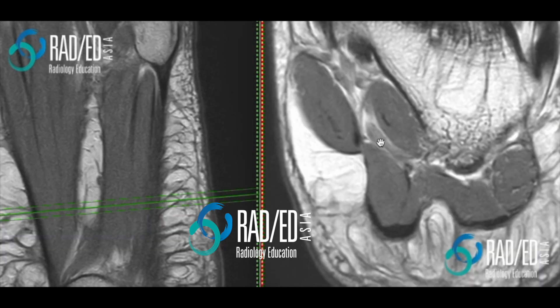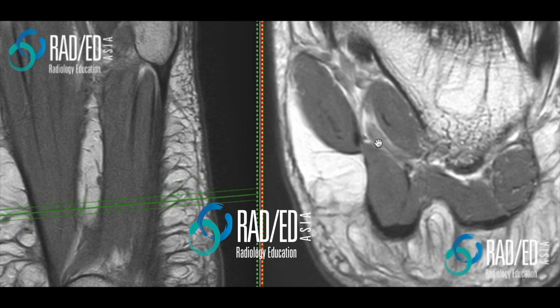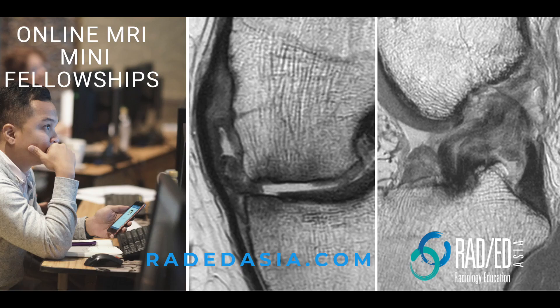The medial band is not something you really need to worry too much about — it's a pretty thin band and you don't tend to see any abnormalities of it. It lies superficial to abductor hallucis, on the superficial margin of that muscle.